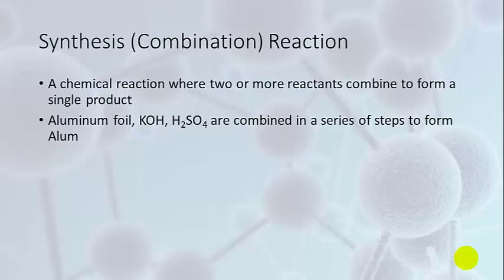You might have started to learn this in lecture. If not, it's coming very soon. What we're going to use as our reactant is aluminum foil, and we're going to turn aluminum foil into this compound called alum. We're also going to be working with potassium hydroxide and sulfuric acid.